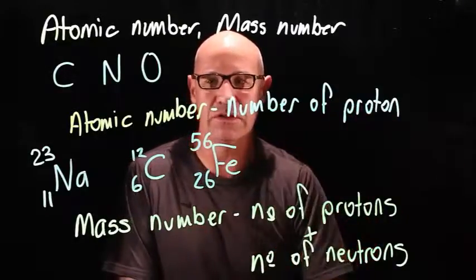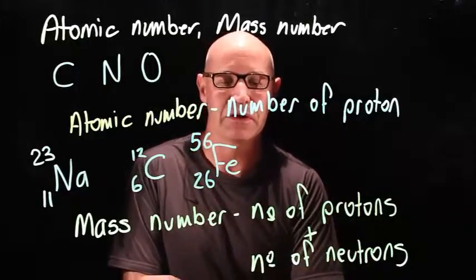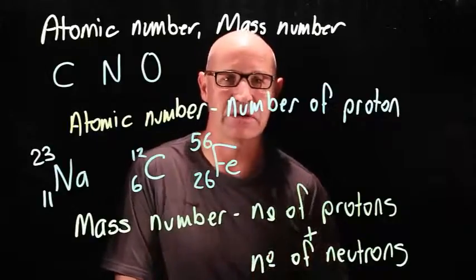The lower number is always the atomic number, and that's the number of protons. The larger number is the mass number. The number of protons plus the number of electrons.